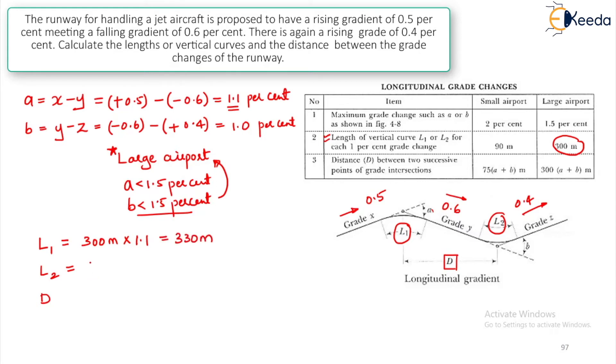Similarly, for L2 it should be 300 meters into whatever that percent of B you have got, that is 1.0. This will remain 300 itself. Then moving on to the value of D, you can observe for large airport the value of D is 300 into A plus B meters. This will give you a value of 300. A is 1.1 plus B is 1.0, so this will give you 630 meters.